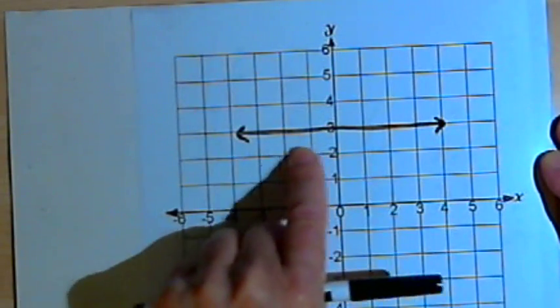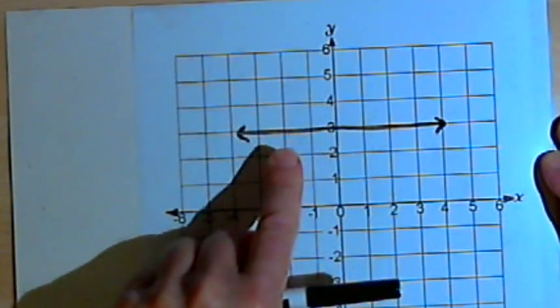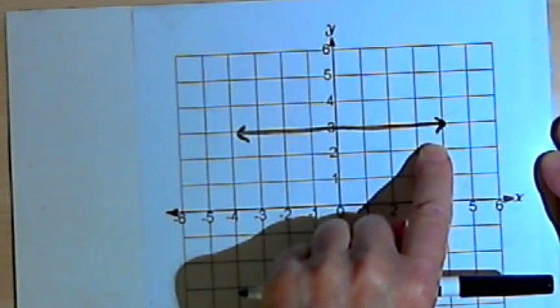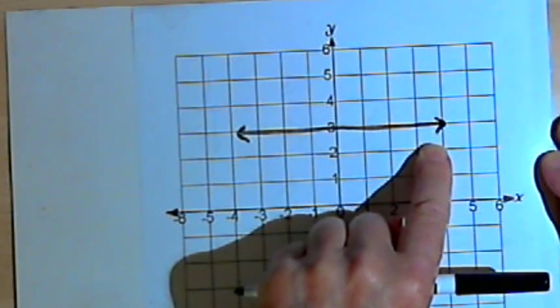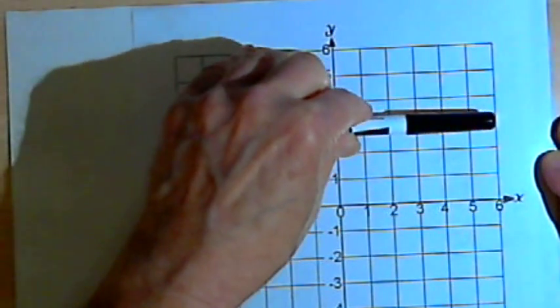As I go from left to right, I'm constantly at the same level. I'm not moving up, I'm not moving down, I'm just on that line where y equals 3. So constant function, it's horizontal, it's always at the same level.